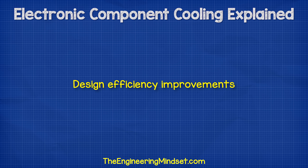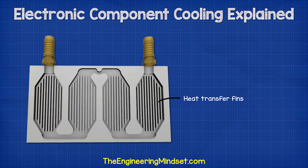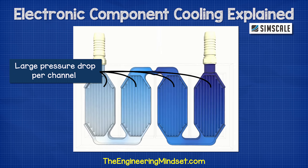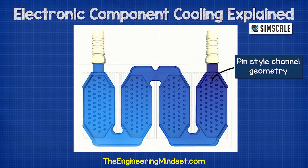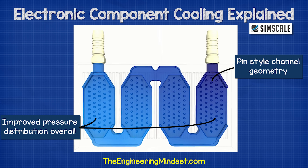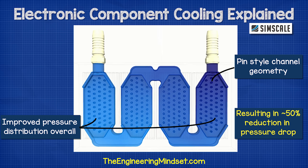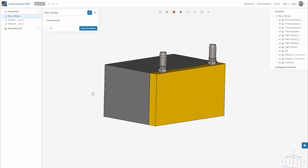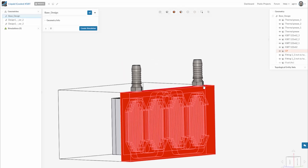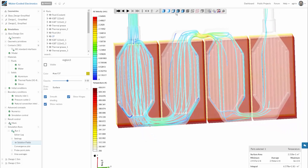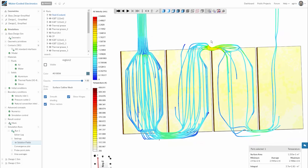Now the next step is to improve the efficiency of our design. The original design has these fins running through the heat exchanger, which help to expose the water to the heat of the IGBTs. However, we can see that this design causes a high pressure drop in each channel. The pressure drop of each channel adds to the pressure drop of the next channel, so overall the pressure drop across the unit is very large. Instead, we're going to use a pin-style channel. When we run the simulation for this design, we see a much more even pressure distribution across each of the channels and a lower pressure differential across the entire unit, leading to improved cooling performance and lower operating costs.